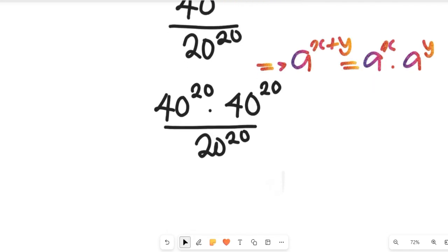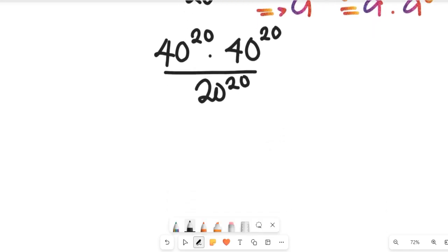Now do you note something? They all have the same exponents now. So what do we do from here? We're going to separate this. This is going to give us 40 to the power of 20 multiplied by 40 to the power of 20 divided by 20.